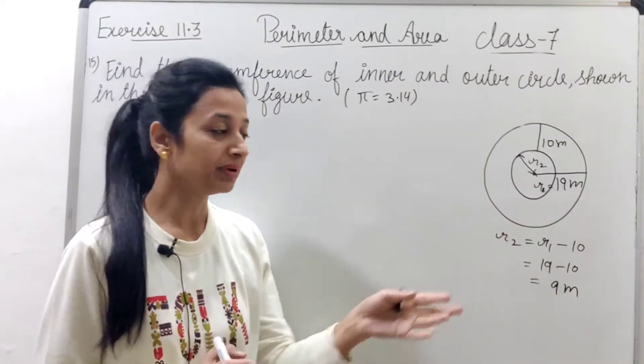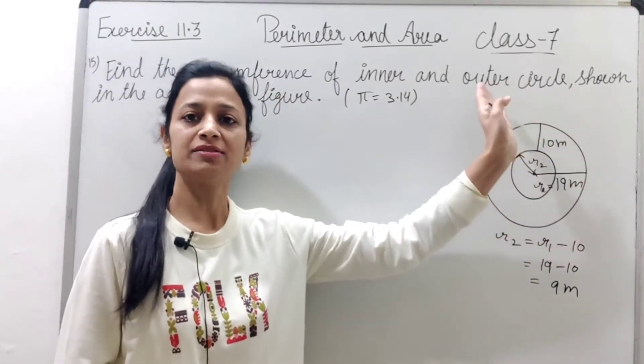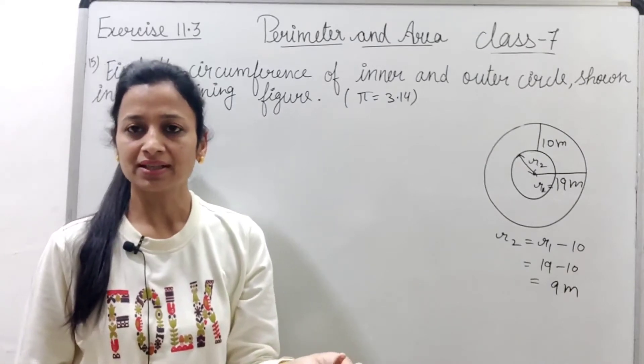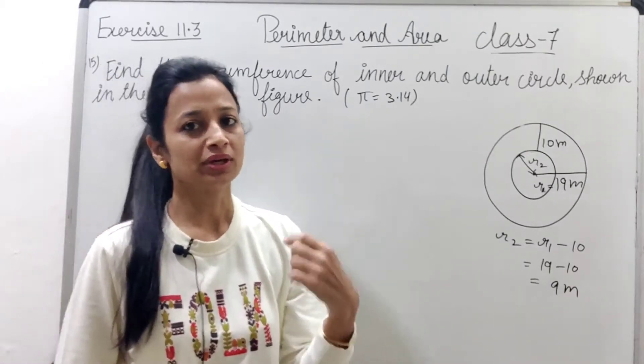अब जबकि हमें inner circle की radius भी मिल गई और outer circle की radius भी मिल गई तो हम circumference दोनों की find कर सकते हैं. Because circumference क्या होती है? 2πr. Okay? तो करते हैं इसको.